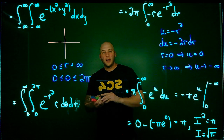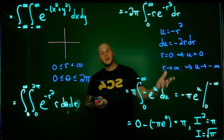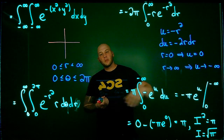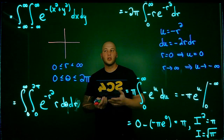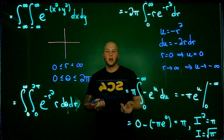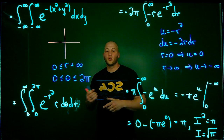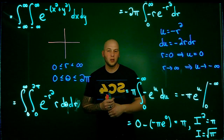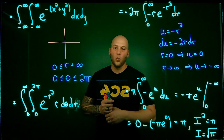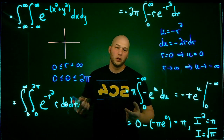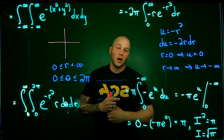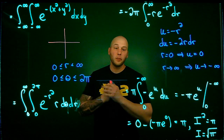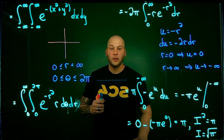Using some manipulation of constants, we can then show that the area under the standard normal distribution, or the normal distribution, is 1. Thank you for watching, and please consider subscribing.